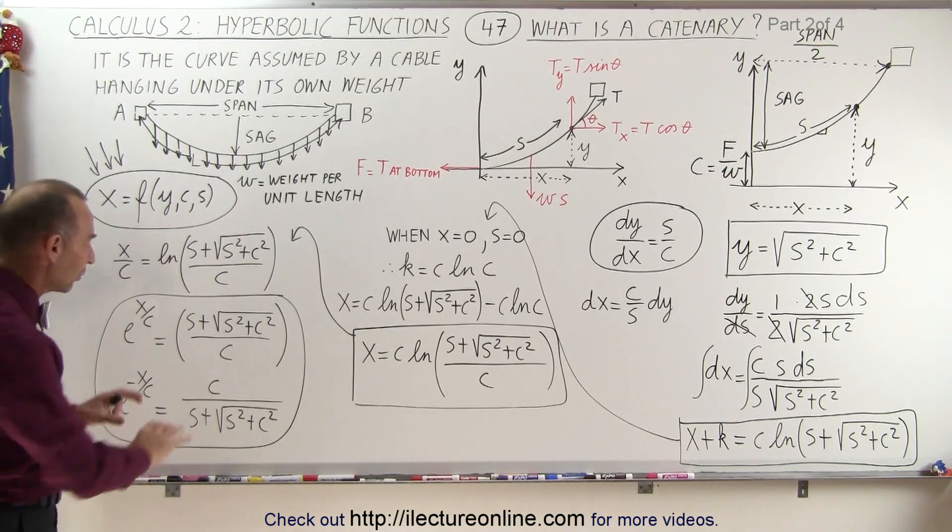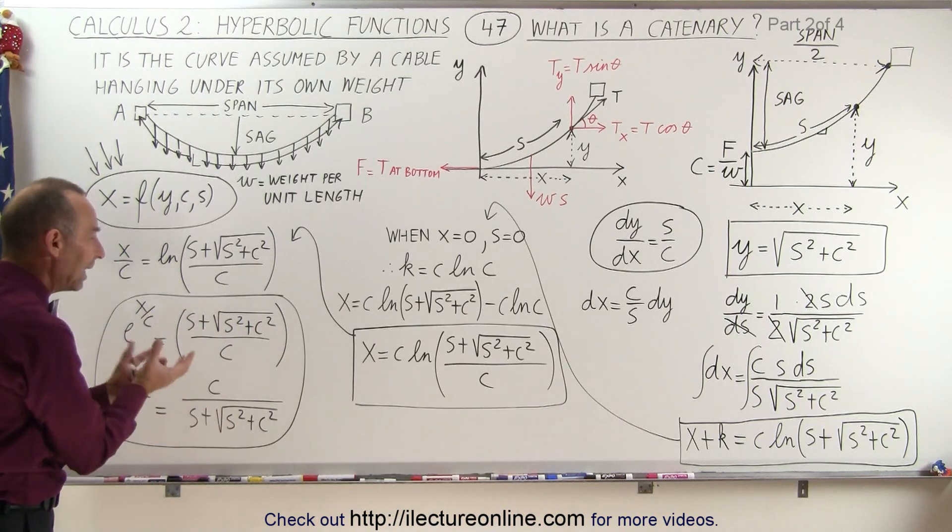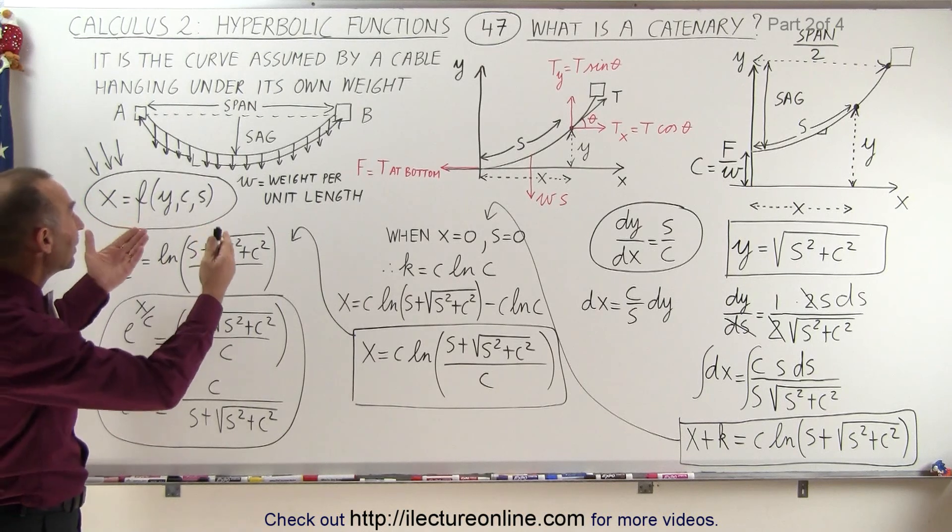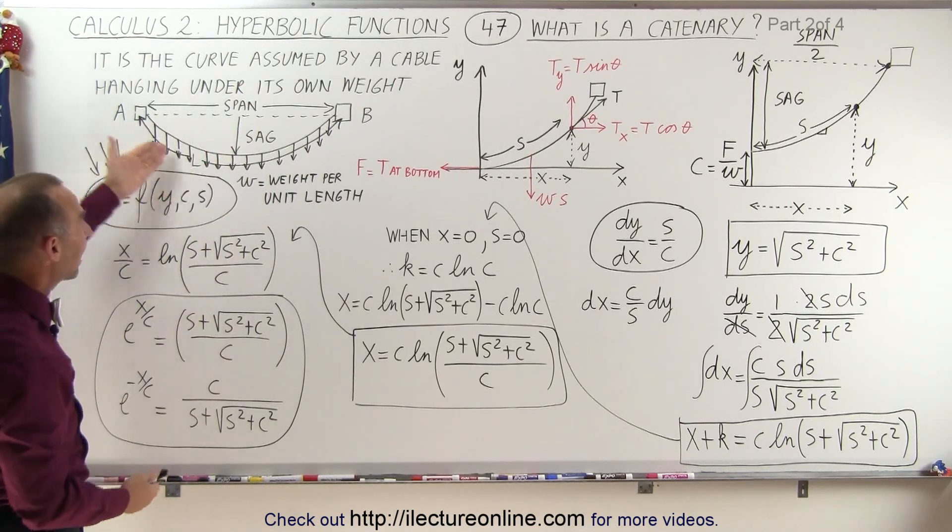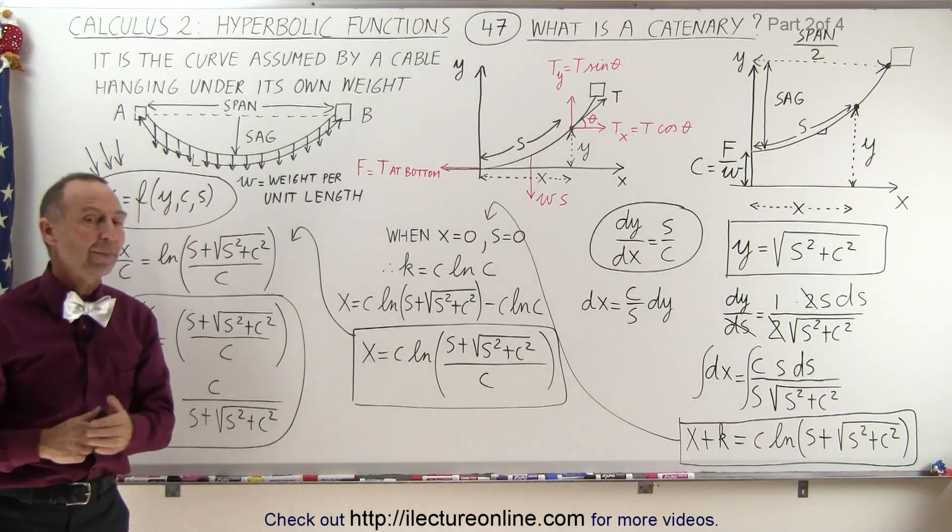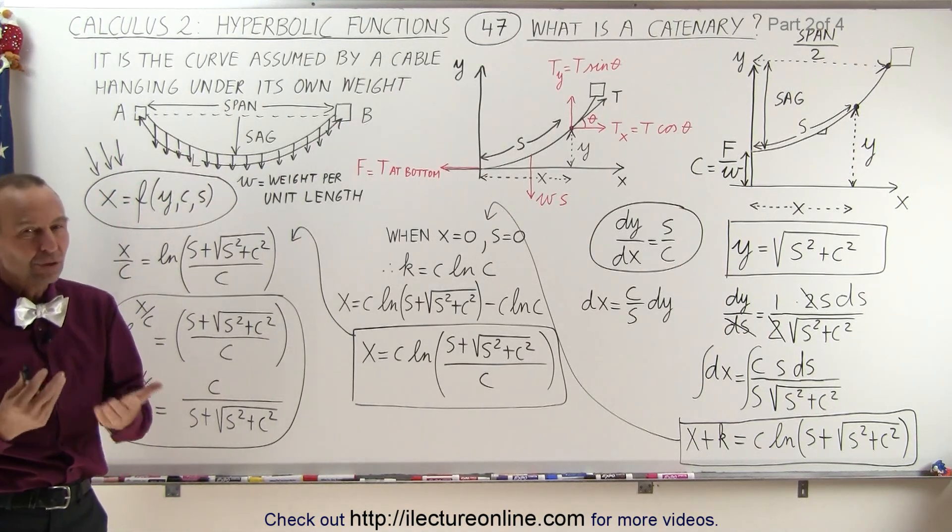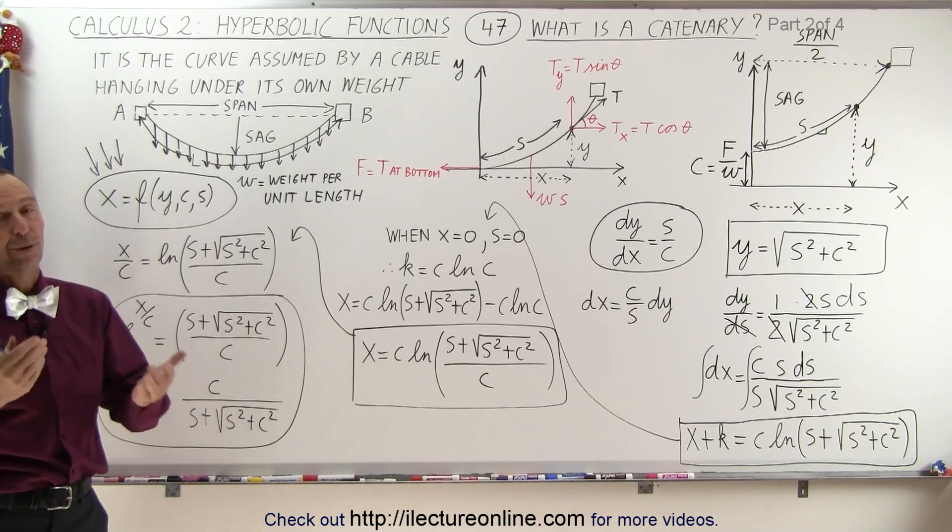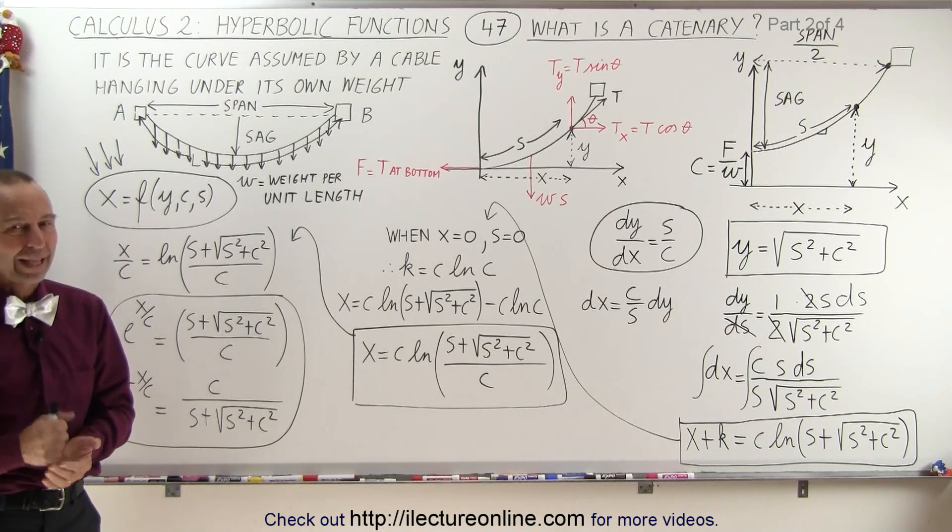And so in the next video, we're going to take this result and actually produce some hyperbolic functions with it. And so then finally we can see how a catenary, which is basically the shape of a hanging cable hanging on its own weight, can be expressed in terms of hyperbolic functions. And then we can use those equations to solve some problems dealing with the catenary or dealing with the hanging cable. And that's how it's done.